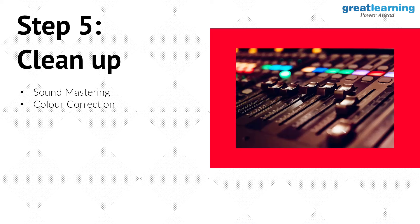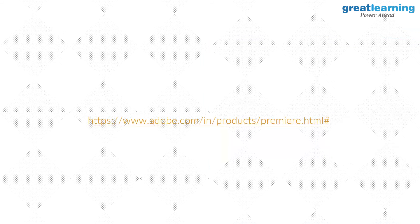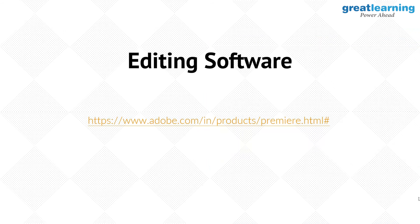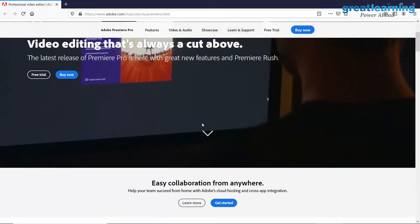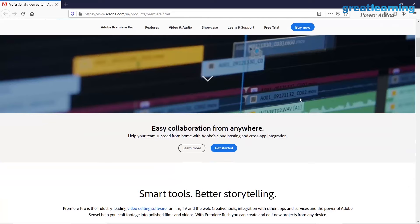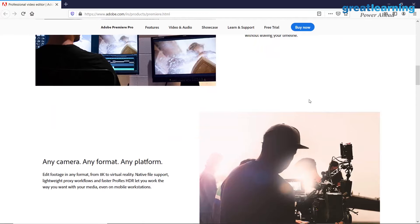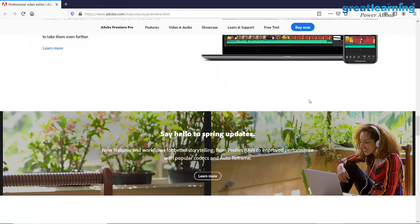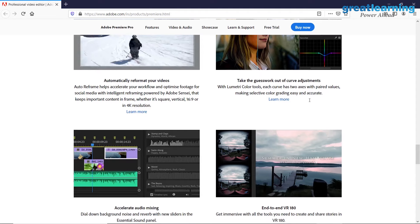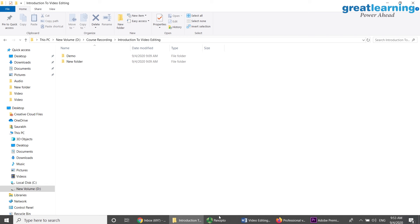Now that we've completed step five, it's time to move into a more hands-on approach. The editing software we will be using is Adobe Premiere, which can be downloaded from the Adobe site. You can buy Premiere or take a free seven-day trial and it has a cloud collaboration feature as well. I already have it installed and I will show you its basic features.